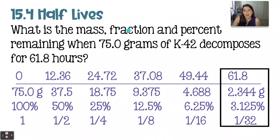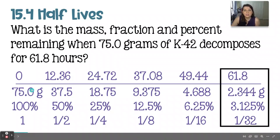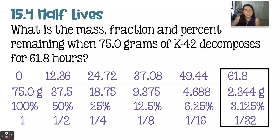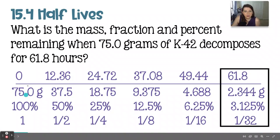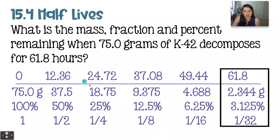We were asked to solve for the mass, the fraction, and the percent. To begin, we have 75 grams, and because it's a half-life you cut this value in half every single half-life that passes. So: 75, cut in half to 37.5, cut in half to 18.75, and continuing to cut in half each step, you get down to 2.344 grams of K-42 remaining after 61.8 hours.